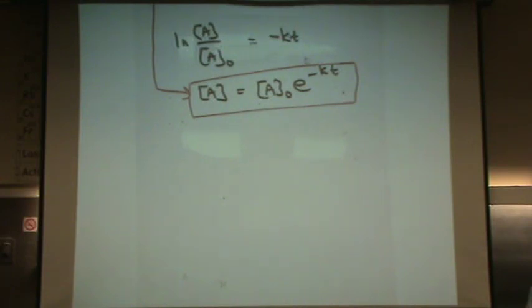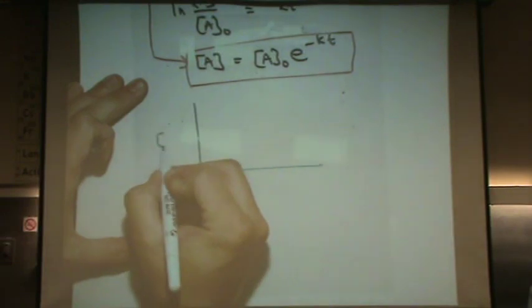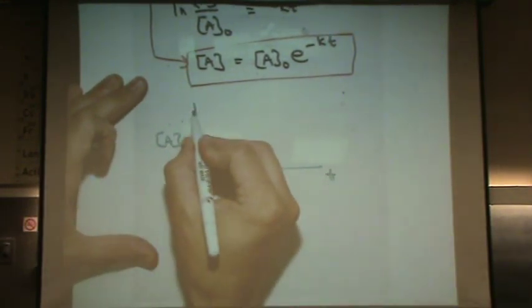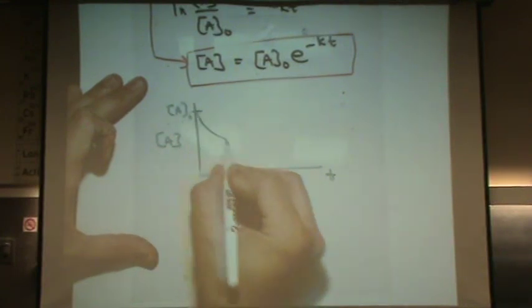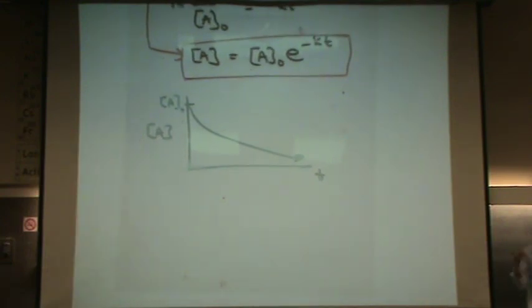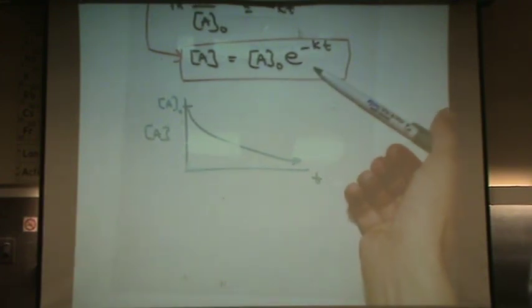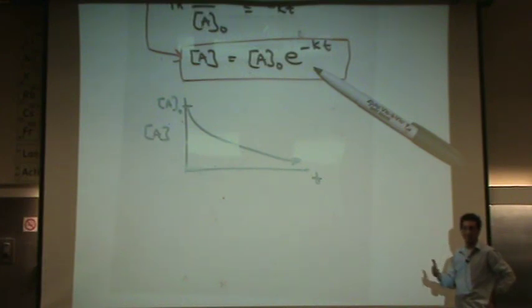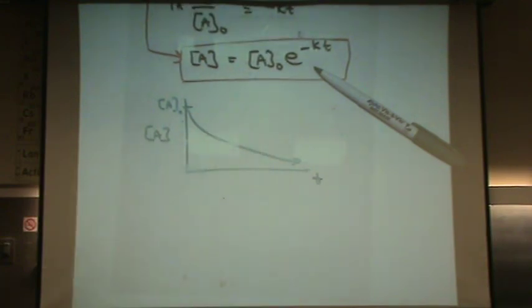If you plotted [A] versus t. And here's [A]₀. It's going to fall as an exponent. A curvaceous exponential fall. That's not helpful to us. Okay. That will be helpful. And that's this equation right here. This will be helpful if you want to calculate the concentration of A specifically. So if the question says this is the first order, find the concentration of A, you're going to use this equation right there.